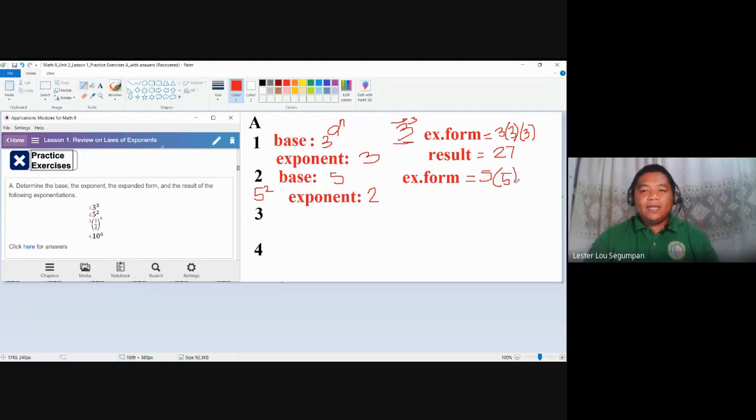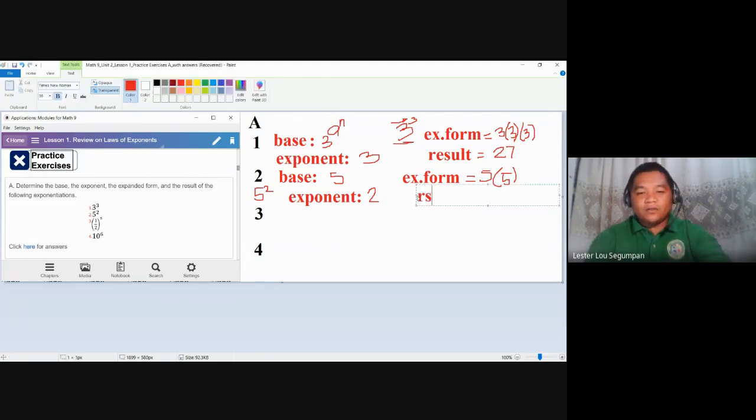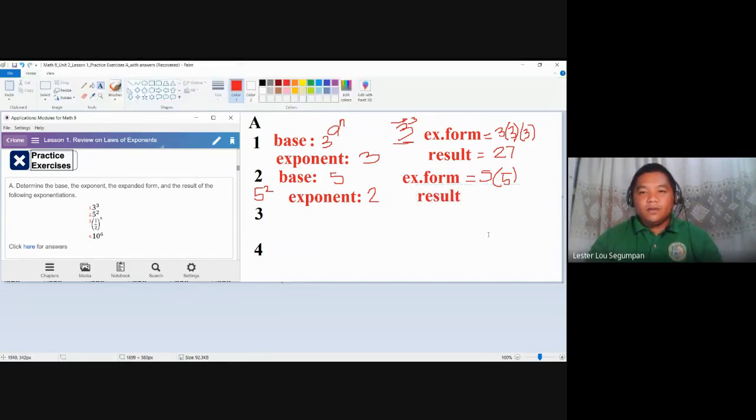Again, I need to repeat, we will not use anymore the symbol x for multiplication because it might mean a variable x later on. So rather, instead of using x as multiplication, we will use parentheses. And finally, for the result, our answer for our result is five times five, 25. So this is our answer for number two.